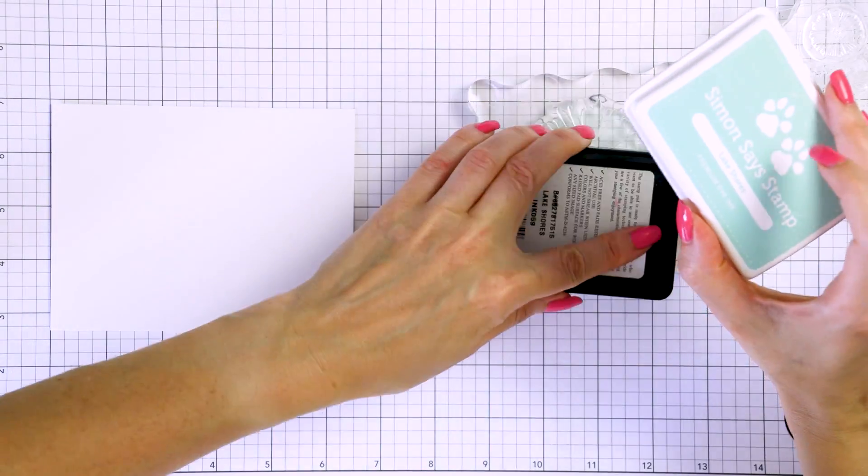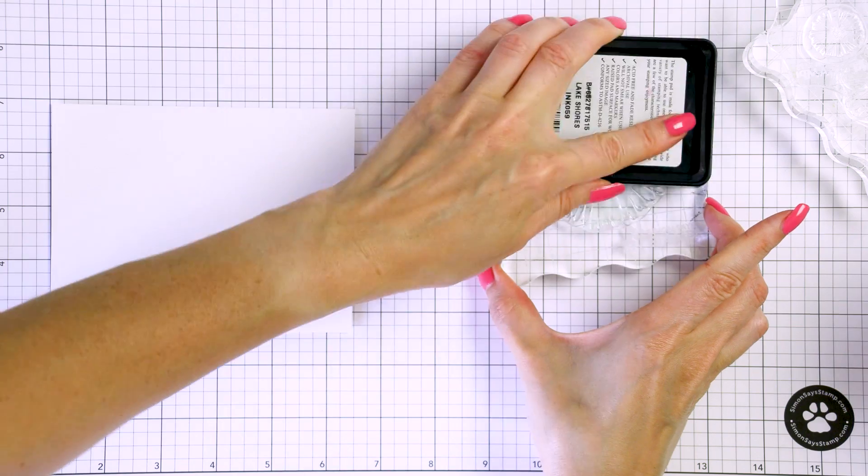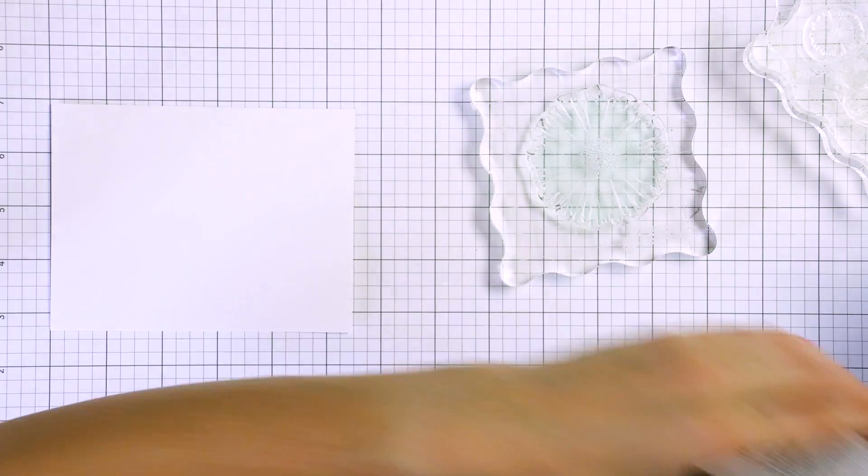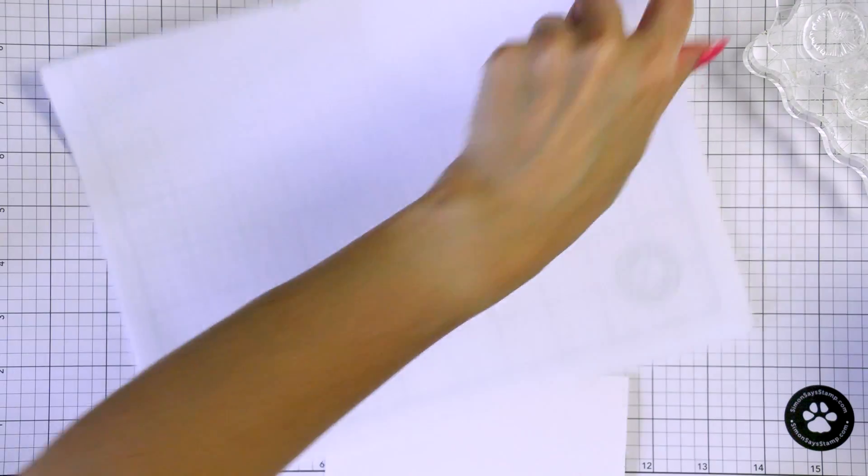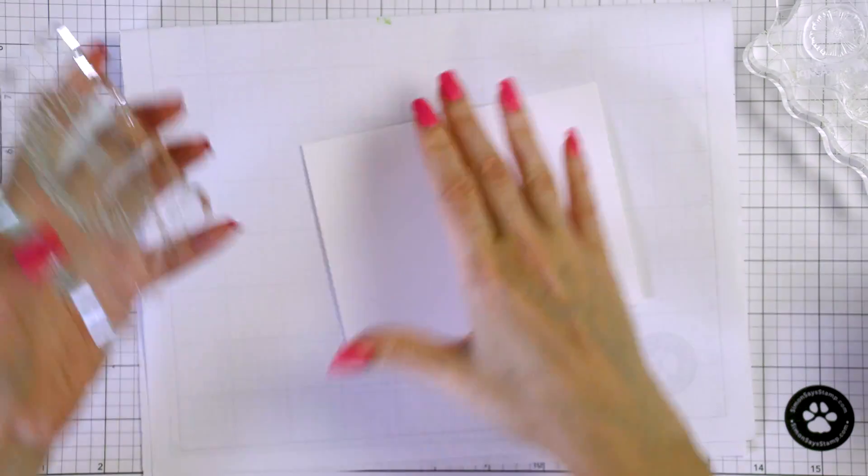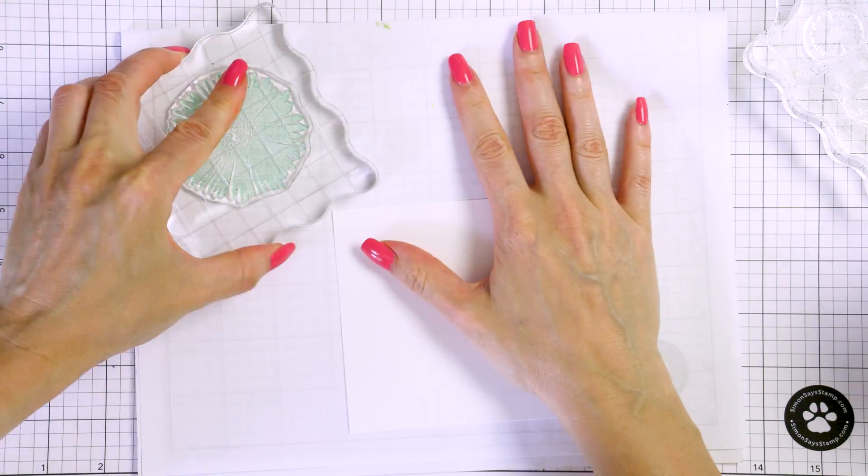You can use any other ink pads you have in your stash. I happen to prefer to use dye type inks for these kinds of backgrounds. I have five colors but you can easily stamp a pattern like this using just four or even three colors of ink.